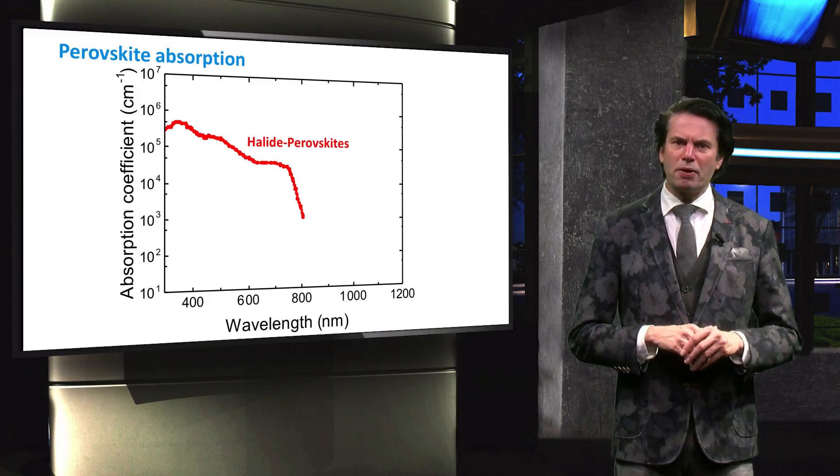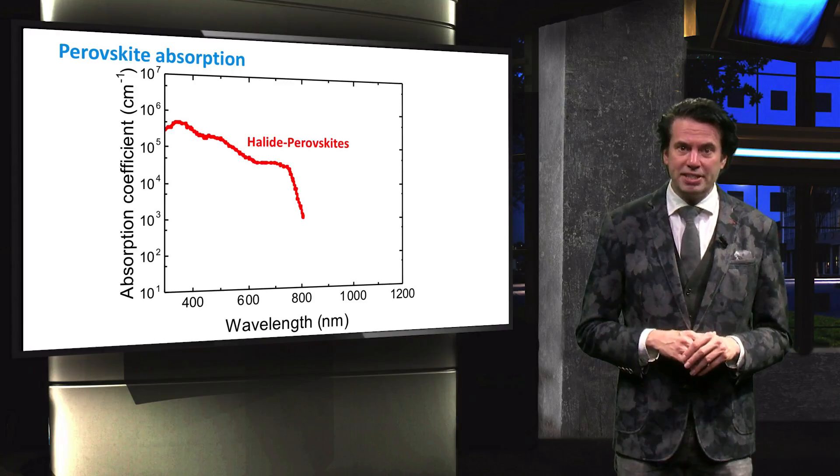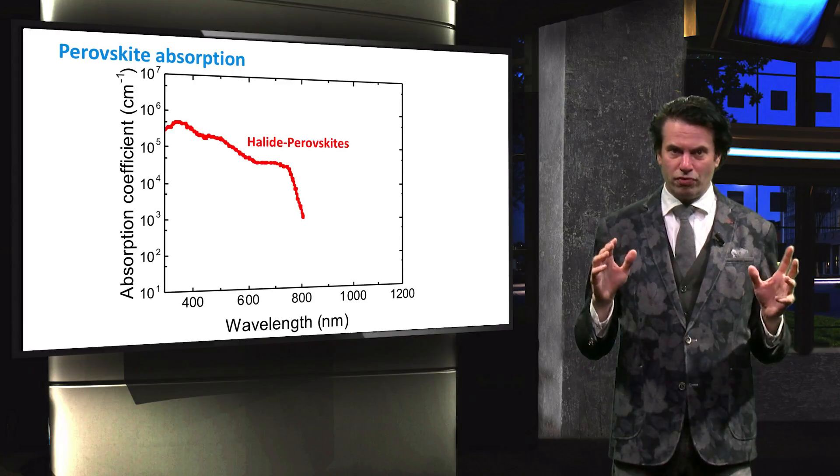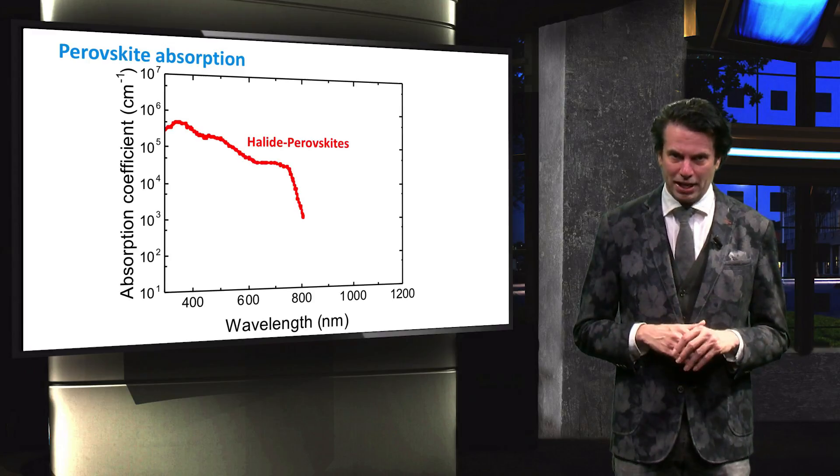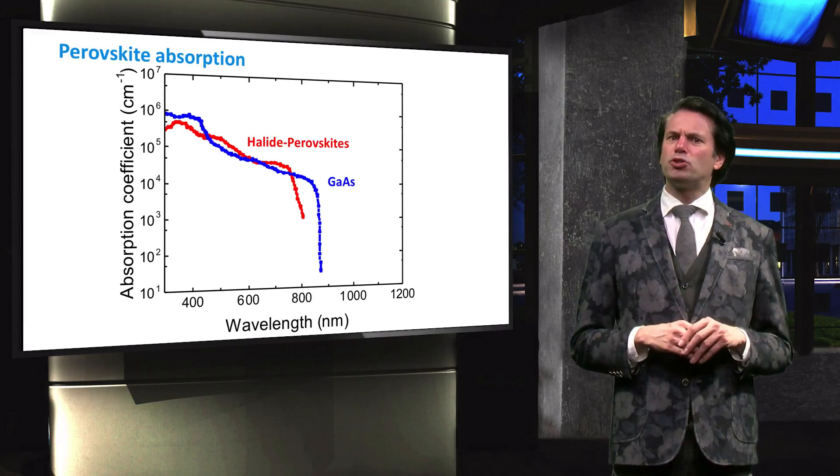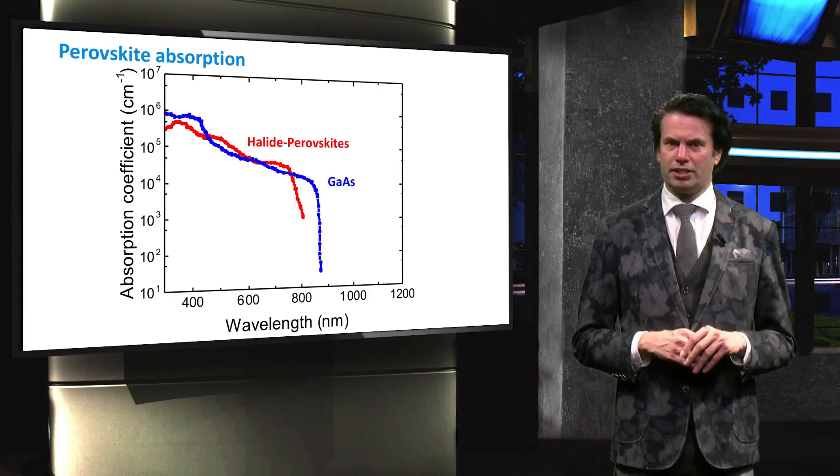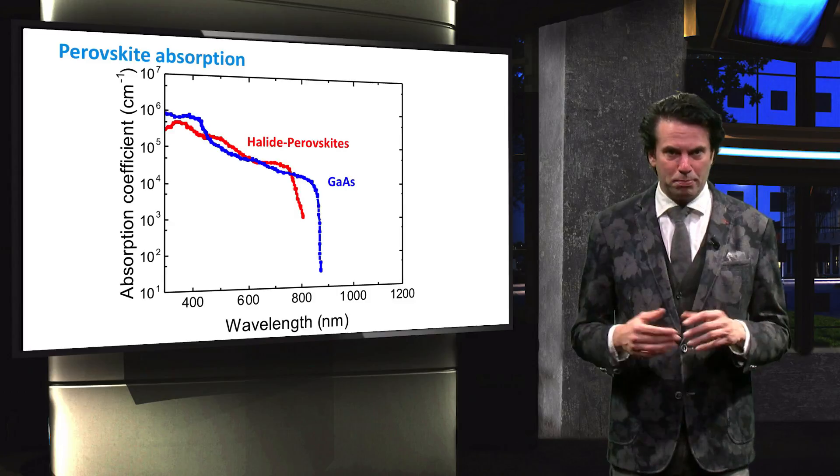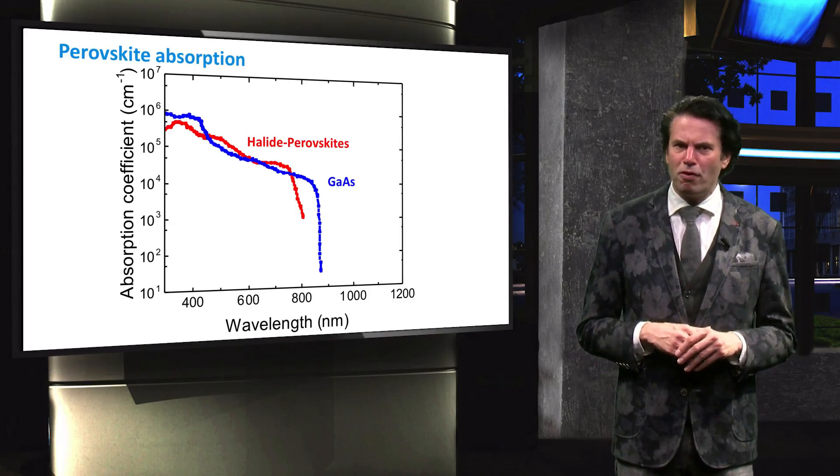Here we see a typical absorption spectrum of a methyl ammonium lead iodide perovskite material. It has a relatively sharp bandgap. Let's include the absorption characteristic of gallium arsenide. Gallium arsenide is a direct bandgap material and therefore has a sharp bandgap.